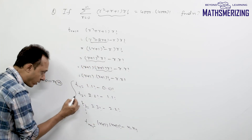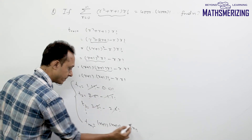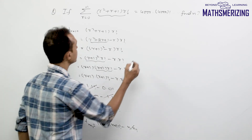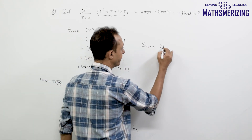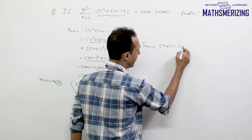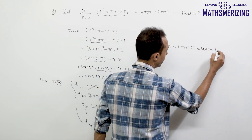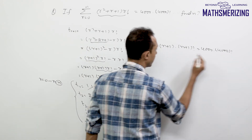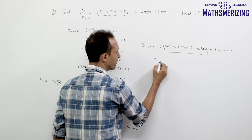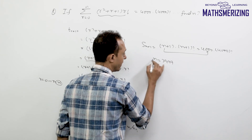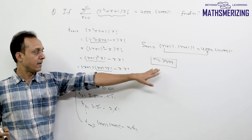Adding all these terms, the intermediate terms cancel (telescoping). What remains is (n+1)·(n+1)!. This is given as 4000·4000!. Comparing both sides, the value of n is 3999.